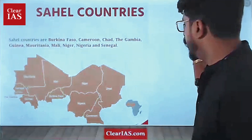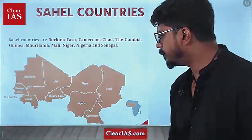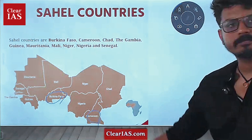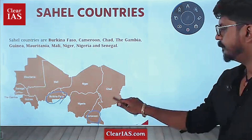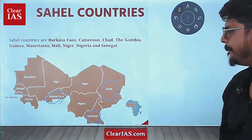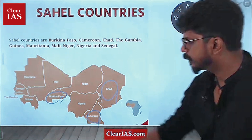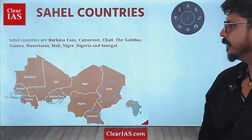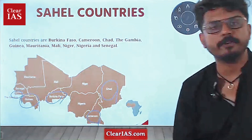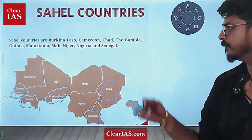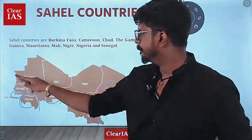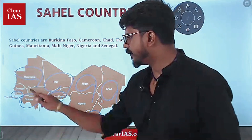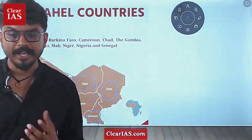Keep marking all the countries. Burkina Faso — we will find out Burkina Faso. Next: Cameroon. Then Chad. Gambia — a small country on the West Coast. Guinea, which gives its name to the Gulf of Guinea. Mauritania. Mali. Niger. Senegal. These are the countries which we call the Sahel region.